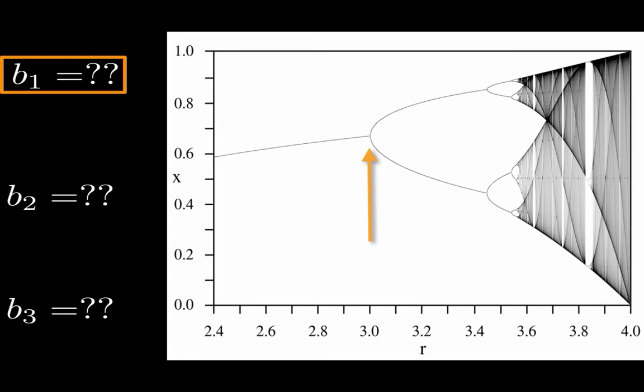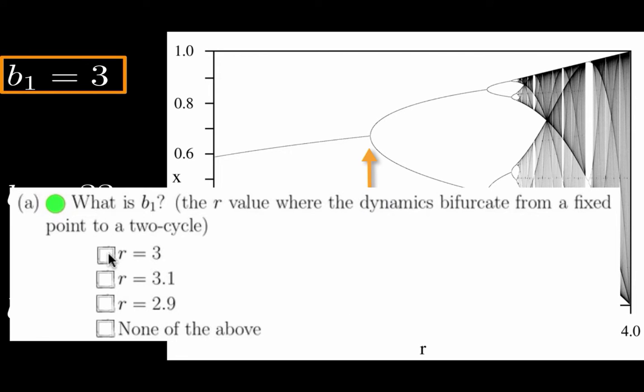We have seen several times now, both in homeworks and quizzes, that the bifurcation from fixed-point dynamics to two cycles occurs at r equals 3, so b1 is equal to 3. This is the answer to 1a.